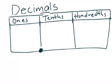We're reviewing decimals today. A decimal is a number that uses place value and a decimal point to show part of a whole.